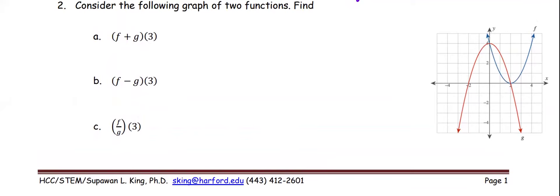Let's rewrite the operation of the function here. So f plus g at 3 means f at 3 plus g at 3. f minus g at 3 is f at 3 minus g at 3. f over g at 3 is f at 3 divided by g at 3. And now we're going to look at the graph.